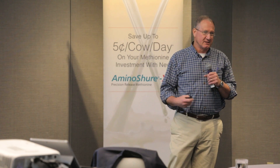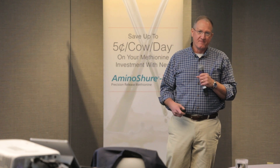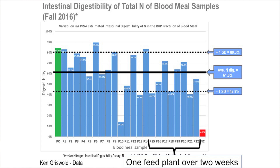Well, that's the same plant over two weeks. So what does that tell us about consistent suppliers? It's really troubling. This is just blood meal — this is the most variable thing out there that we know of. But we all use a lot of it. If you're trying to balance for amino acids and one week you got this load and the next week you got that load, what's going to happen? Something's going to happen, and somebody's going to call you and say, 'I just lost milk, you've got to come back and fix it.'